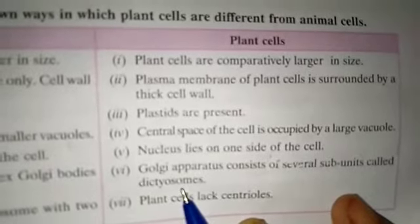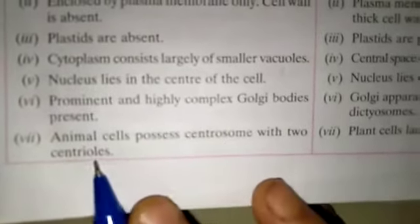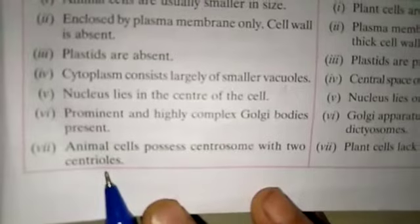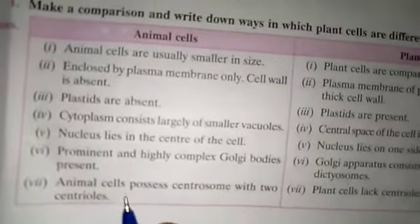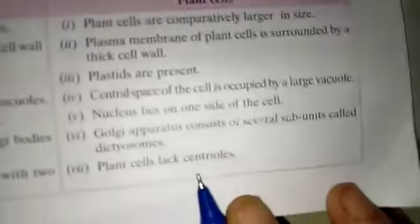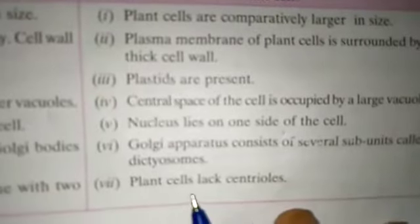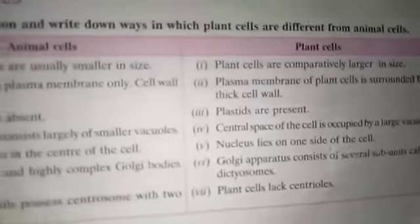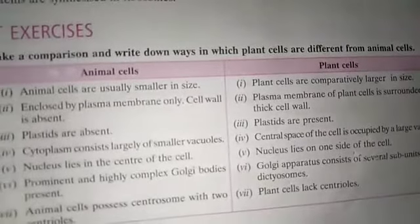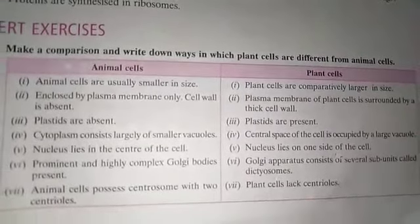Next character: animal cells possess a centrosome with two centrioles, which are present in animal cells. In plant cells, these are absent — plant cells lack centrioles. Okay students, write down these differences in your copy. We will discuss the next topic in our next class. Thank you.